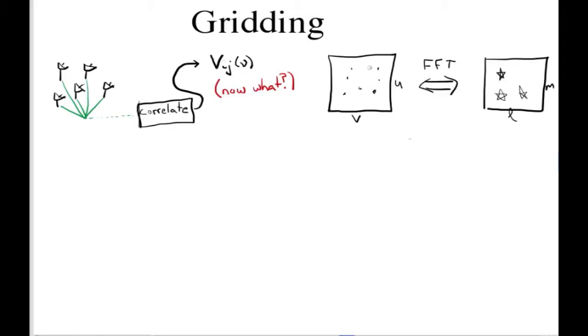So how do we go about actually constructing this UV plane? The first thing we need to know are the coordinates in the UV plane to which each of these visibilities output by the correlator correspond. In order to do that, we need to know where our antennas were so that we can take that baseline for whichever antenna pair we choose, B sub ij.